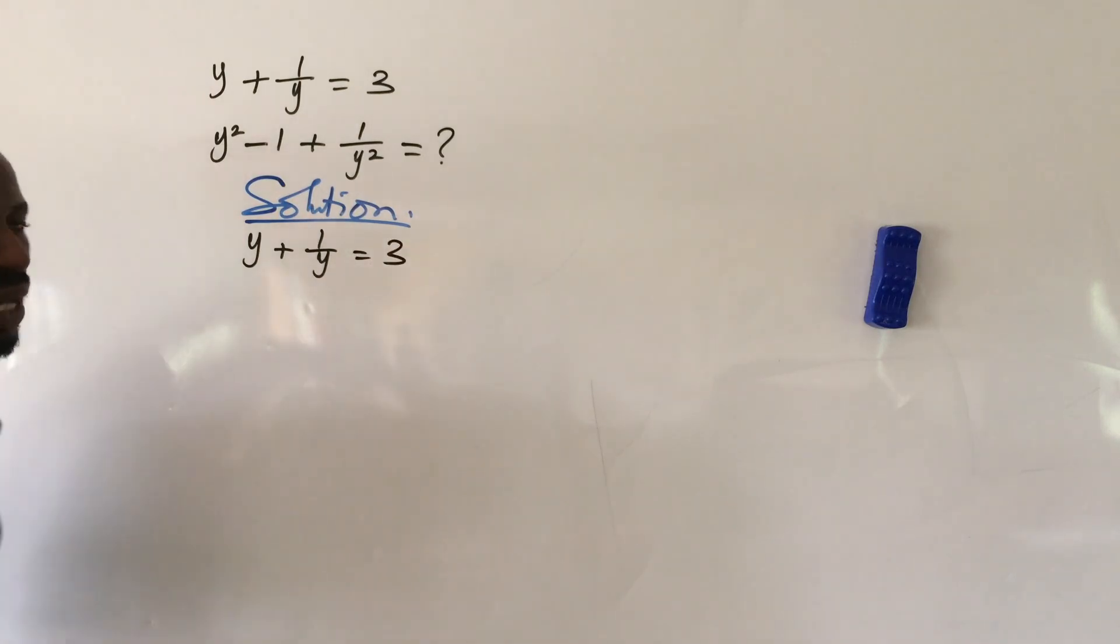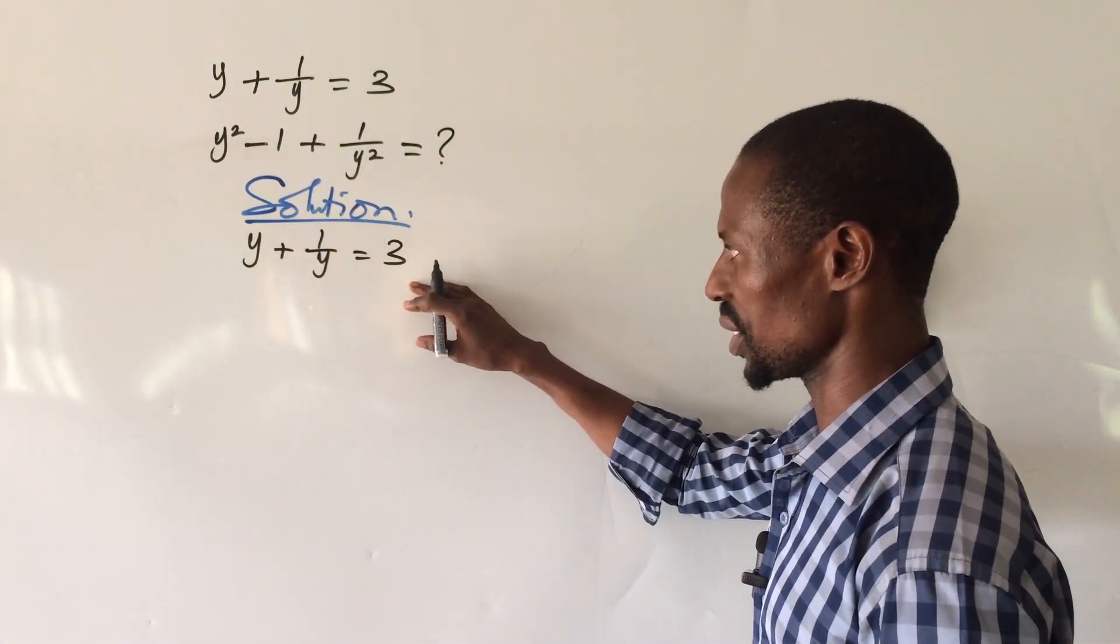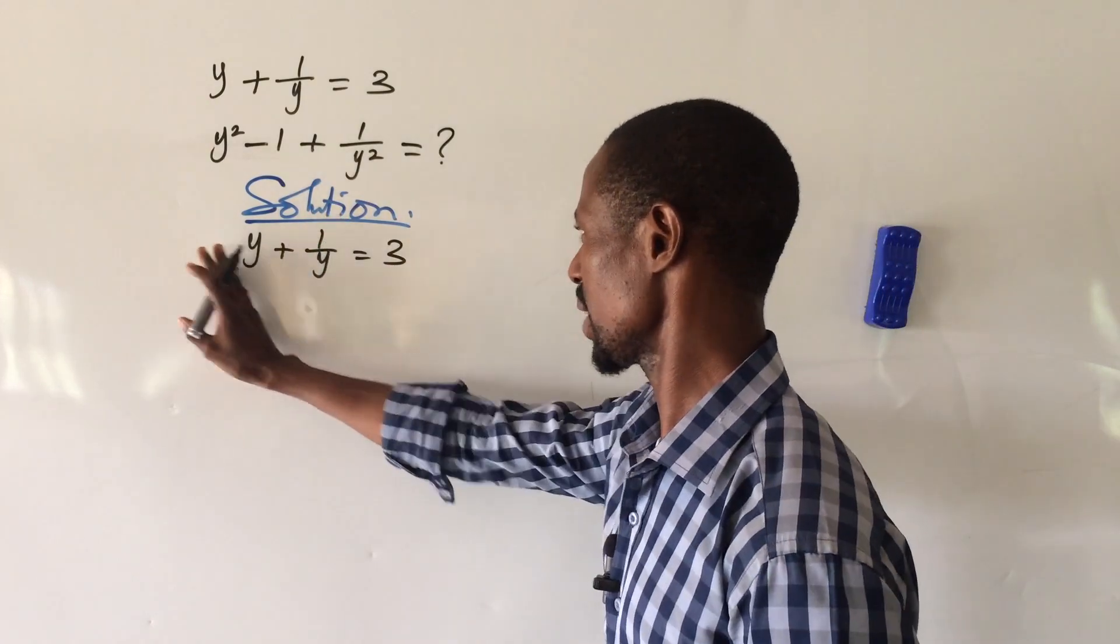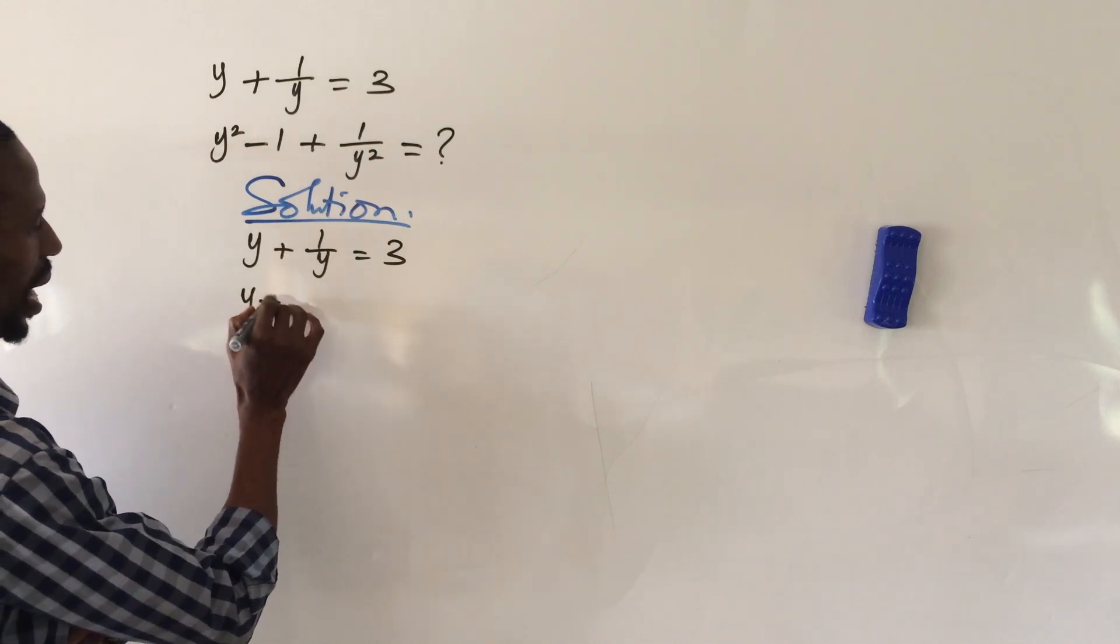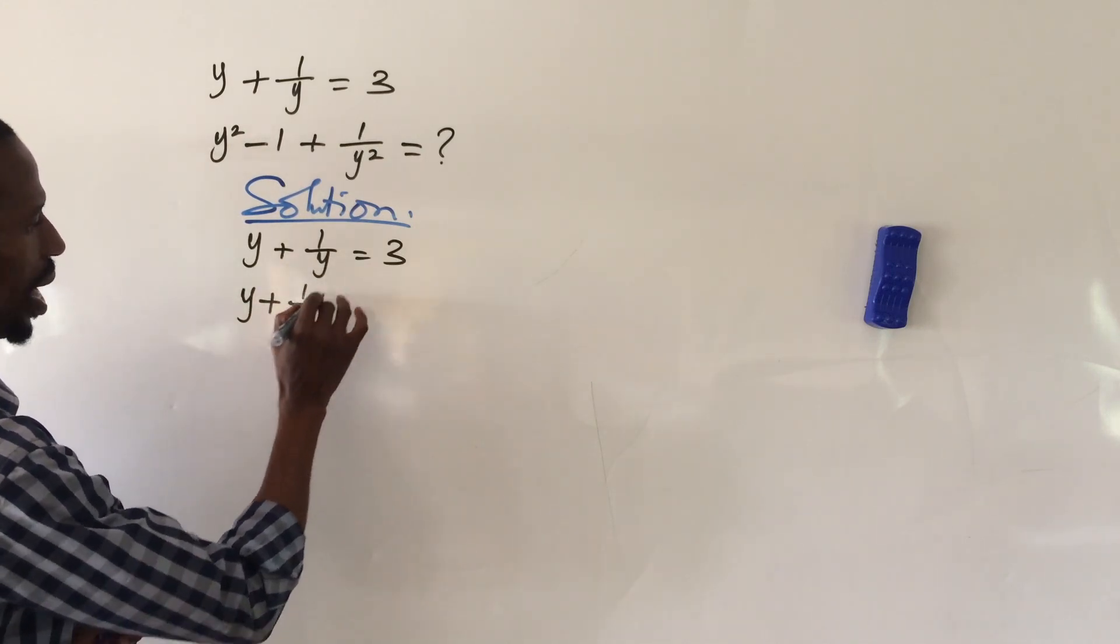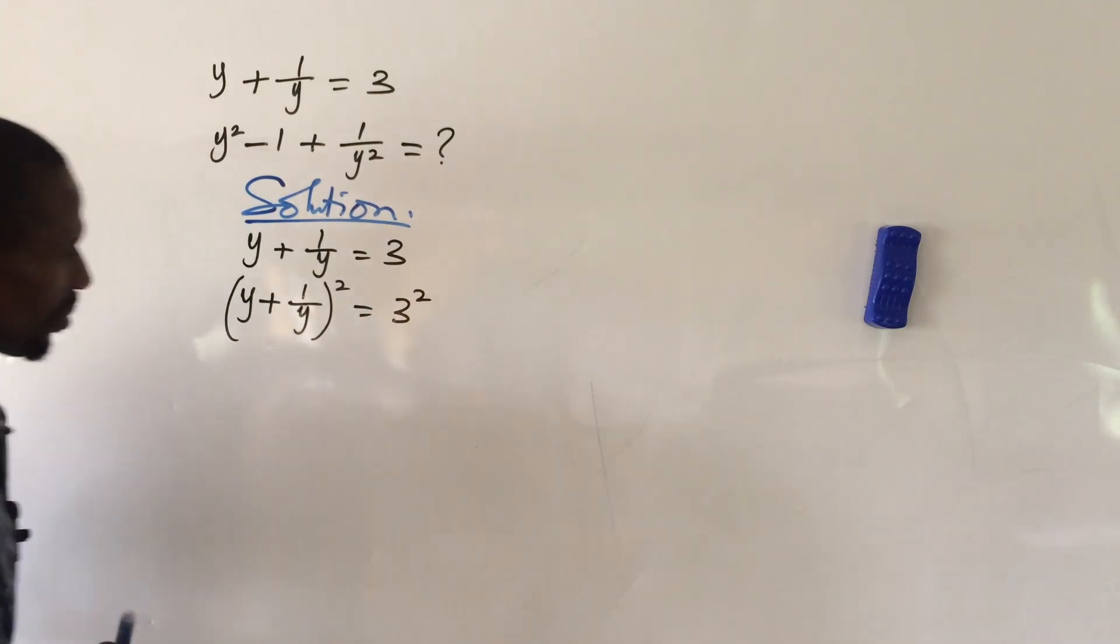Now the first thing we're going to do here is to square both sides of the equation. So we're going to square this together and square the right hand side, and we're going to have (y + 1/y) squared equals 3 squared.